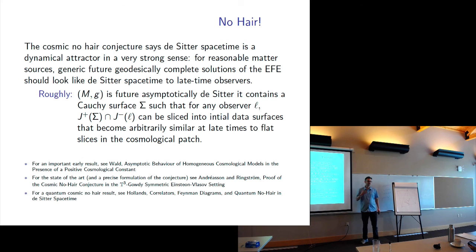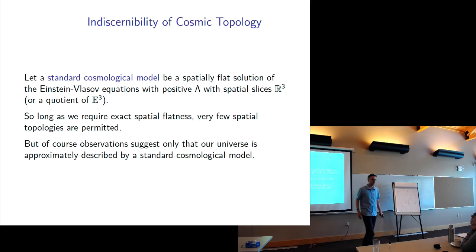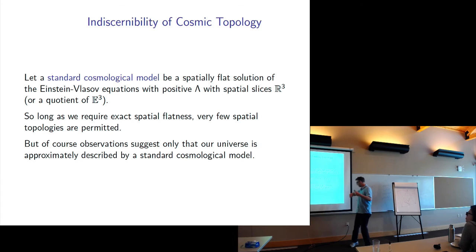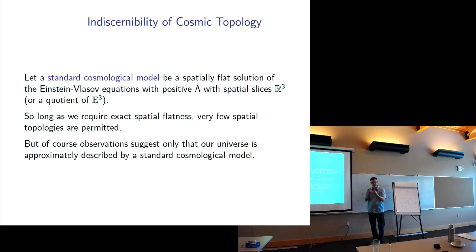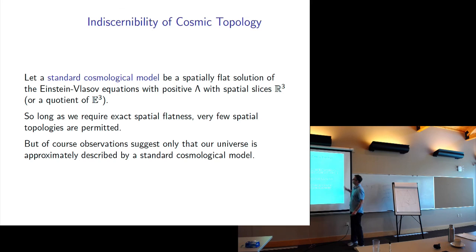There's a literature going back to the 1970s about whether we can detect cosmic topology in general relativity, but it uses a sense of detecting cosmic topology that's quite different from what I want to talk about — this is more physics-y. You don't have to rely on bespoke spacetimes to get your examples and counter-examples; the dynamics gives it to you.